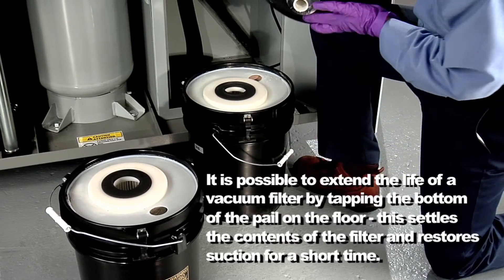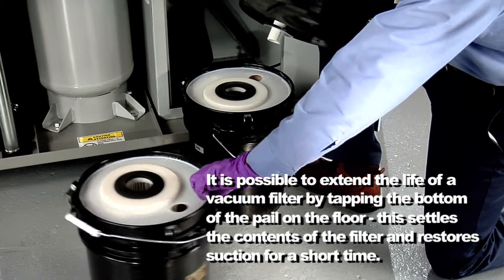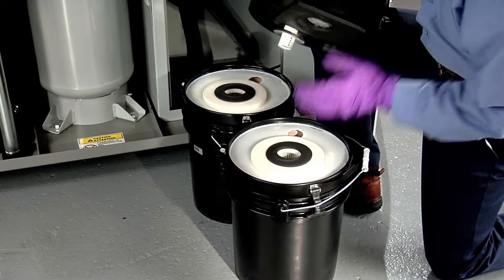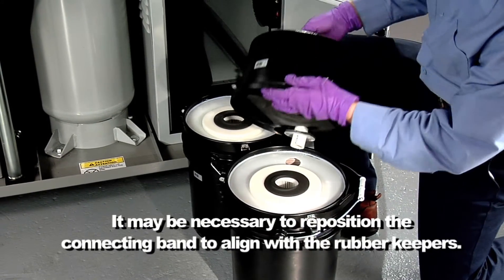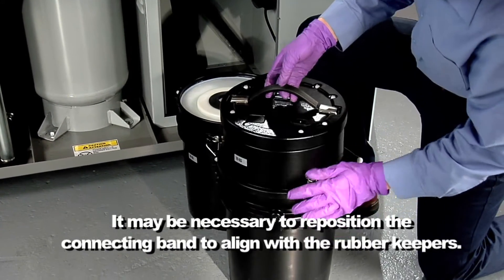Open the latch on the connecting band and remove it from the old filter pail. Assemble the connecting band to the new filter pail.